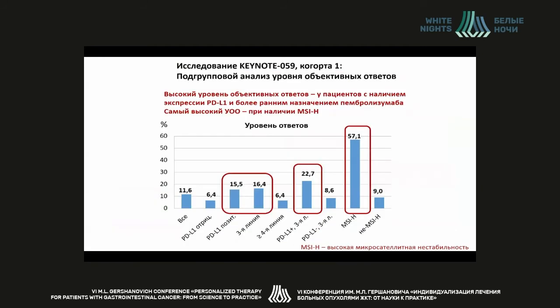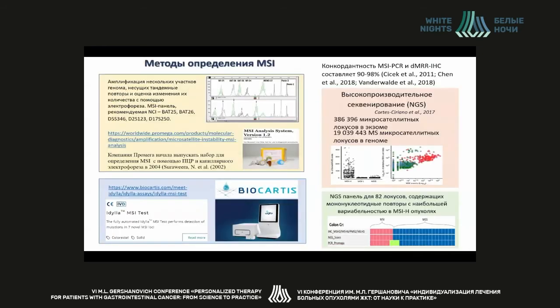Despite their importance, in the Keynote 059 trial, MSI-HI turned out to be the most important predictive marker for response to pembrolizumab, and this was reflected in the registration process. MSI-HI is the most important marker, and pembrolizumab may be administered for many types of solid tumors.